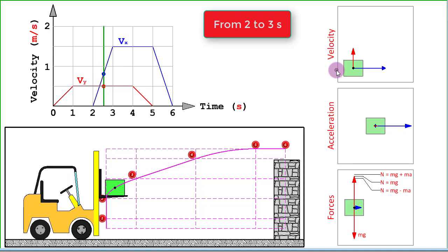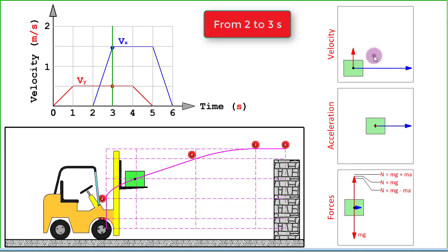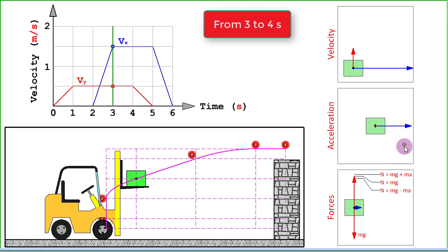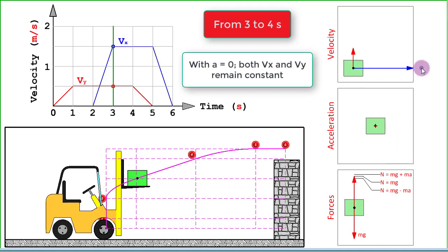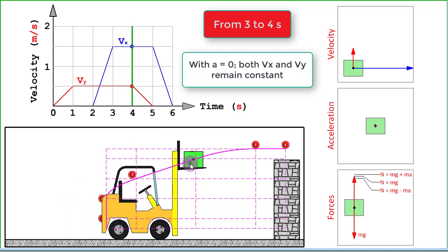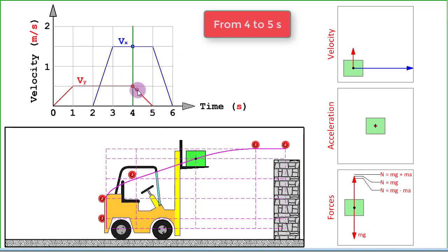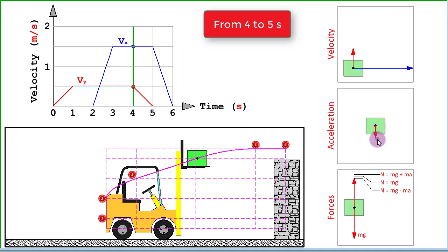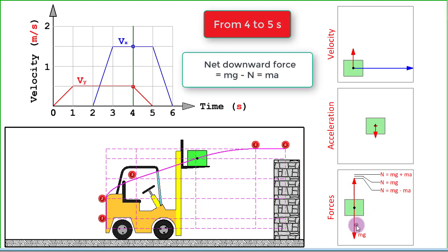The rightward velocity reaches a maximum value and thereafter remains constant. The force vanishes and with it the acceleration also vanishes. With steady velocity to the right and steady upward velocity the block continues its motion until the end of 4 seconds. At that point, deceleration of the upward motion starts. Deceleration in the upward direction is like acceleration in the downward direction, and this downward acceleration is caused by some net downward force.